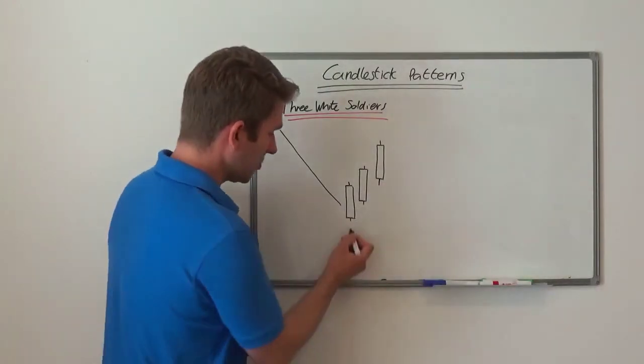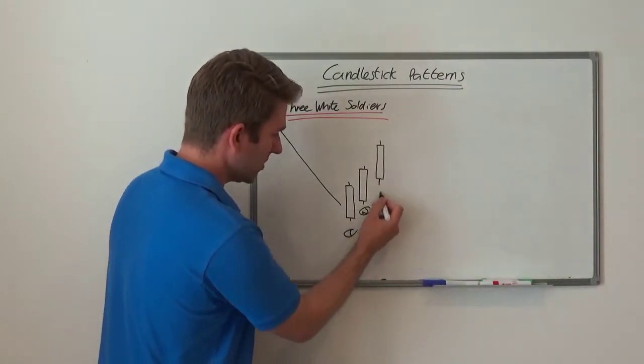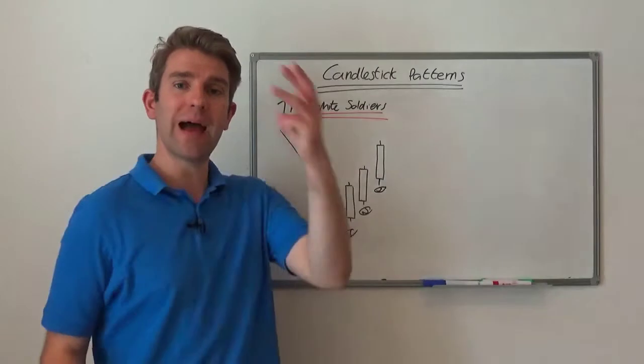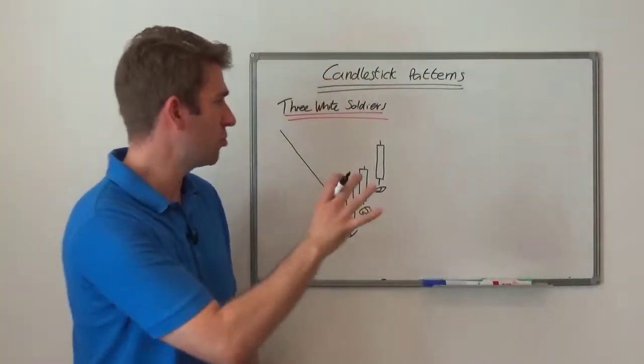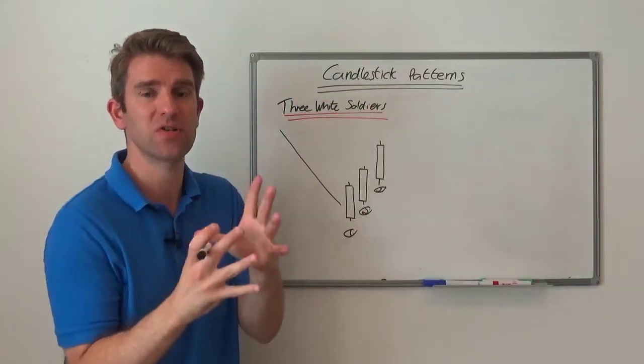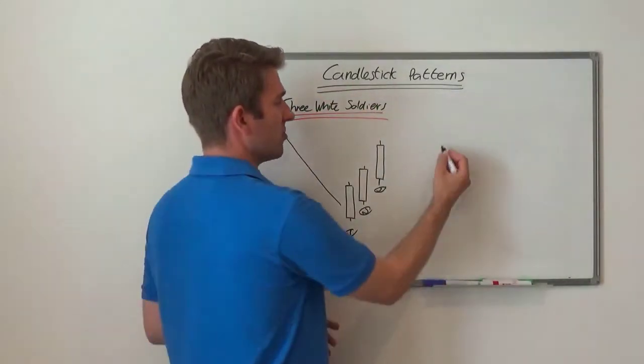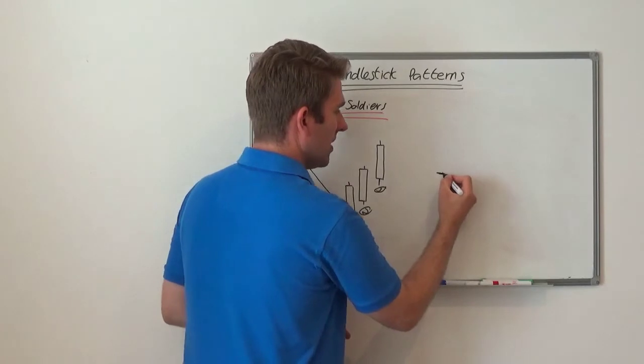We've got candle one here, candle two, and candle three. All three of them have to have a long body with a short tail and a short wick. You don't want to have any kind of reversal. You really want to see from an intraday perspective there's your open and there's your close.